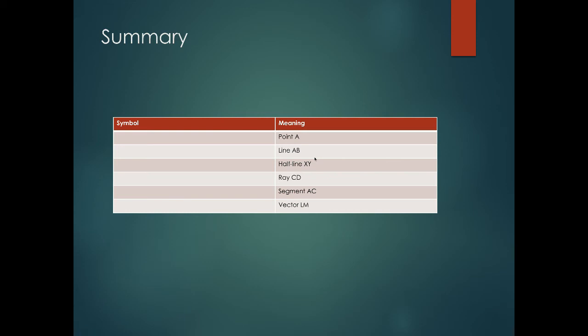Here are some symbols: point A you just write A, you don't have to put a point next to it. Line AB, that's the line going through A and B. Half line XY, we put an open circle and then an arrow to the right. Ray CD.